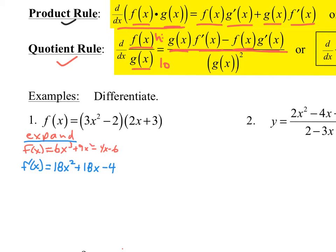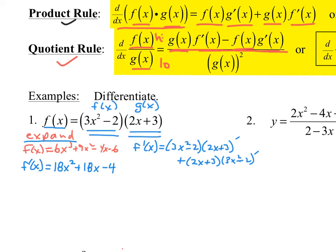There's a result based upon expansion. The other way is to use the product rule by calling this f of x and this g of x — a definite product of two functions of x. We're going to take the first times the derivative of the second plus the second times the derivative of the first and apply the product rule. Some of you may want to write it out with prime notation to say we're taking the derivative of that piece.